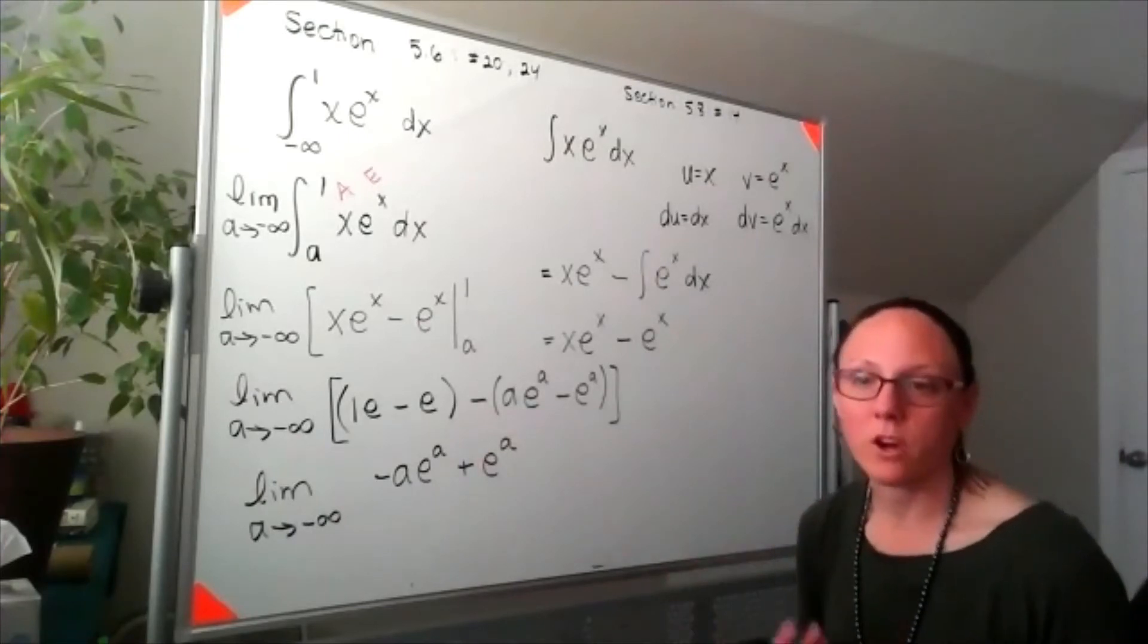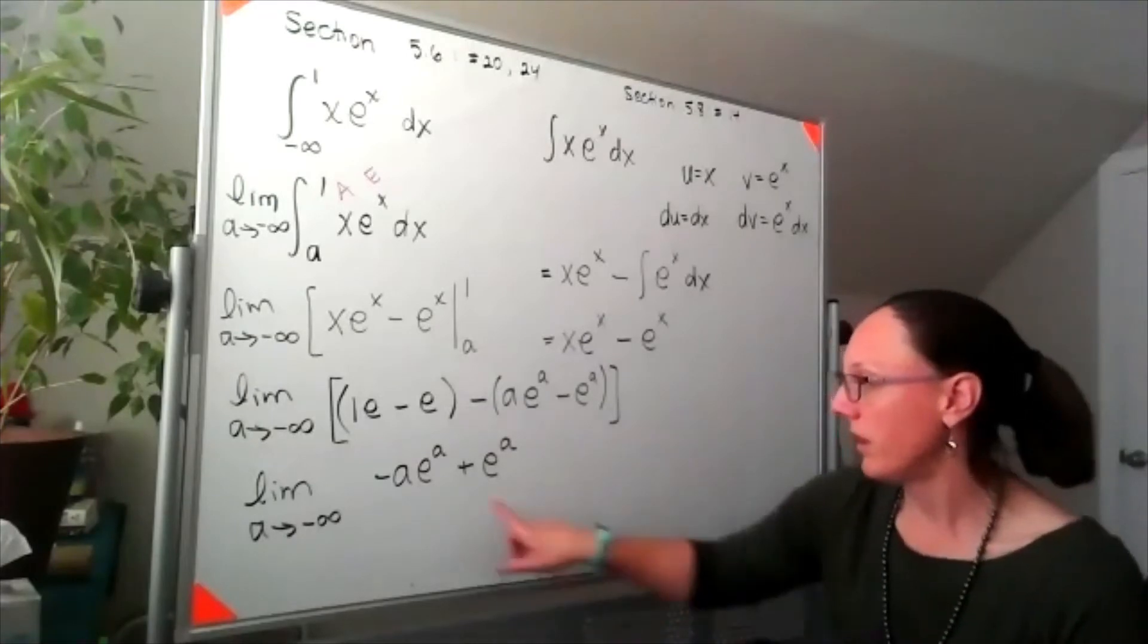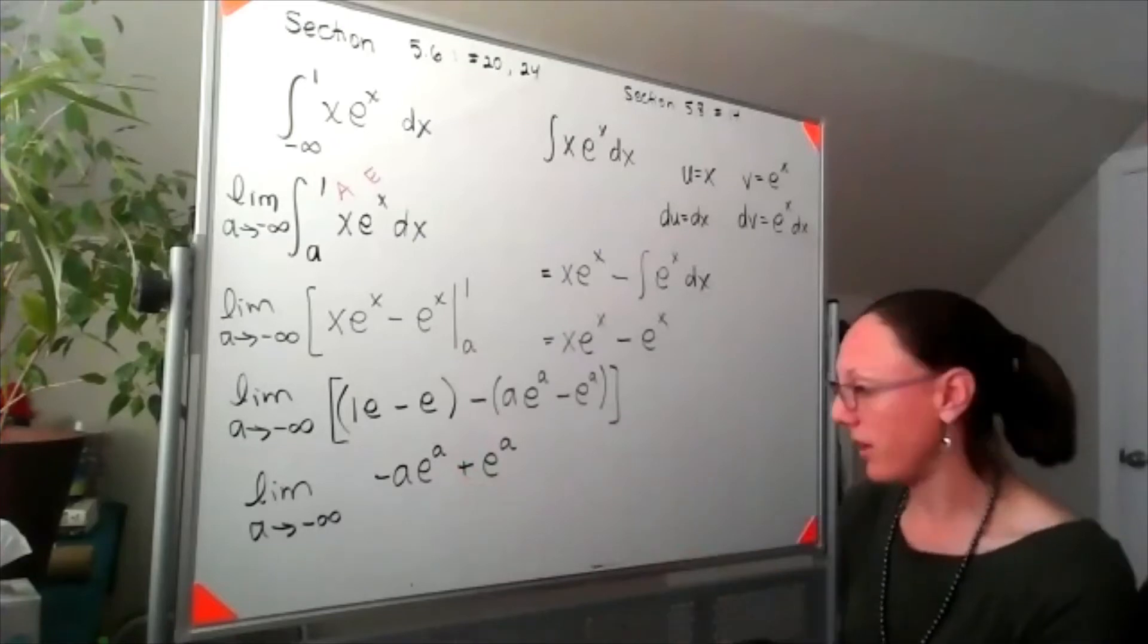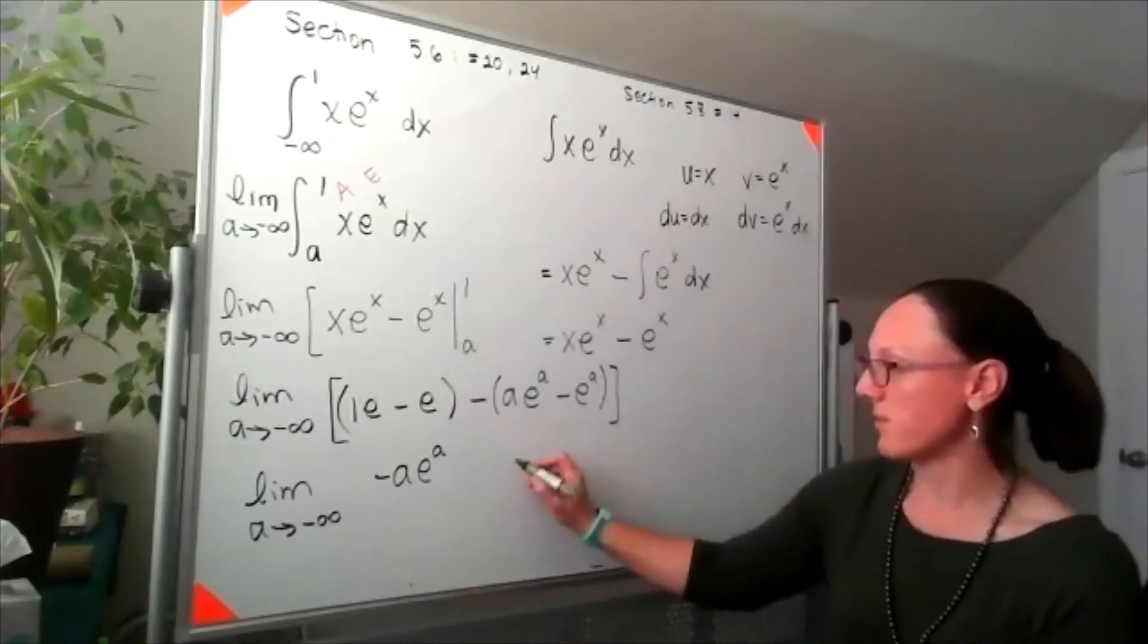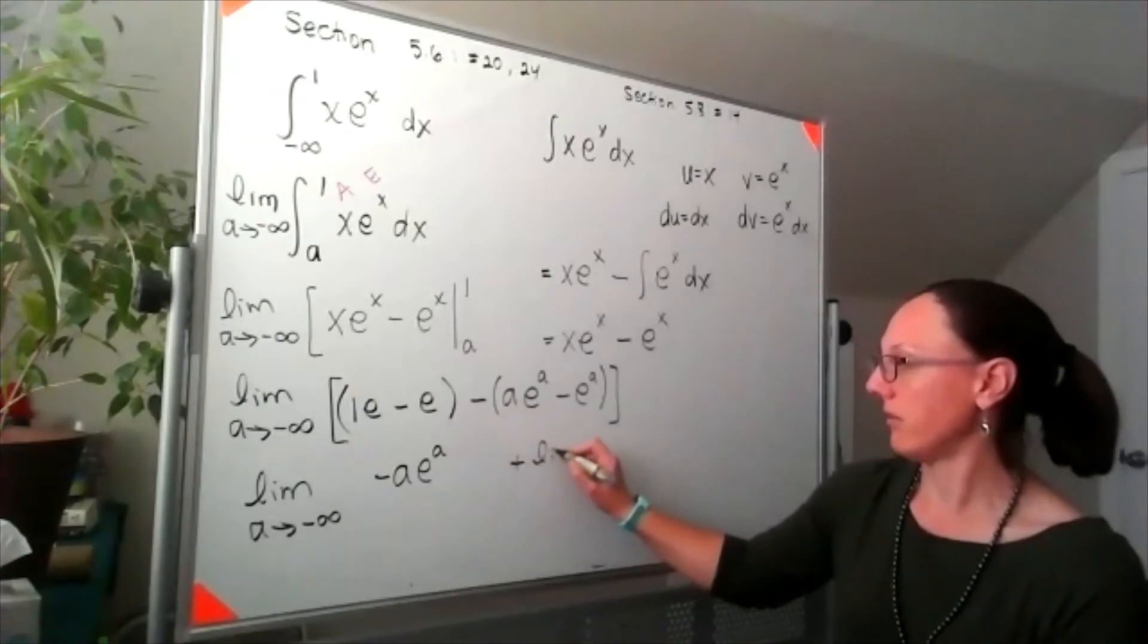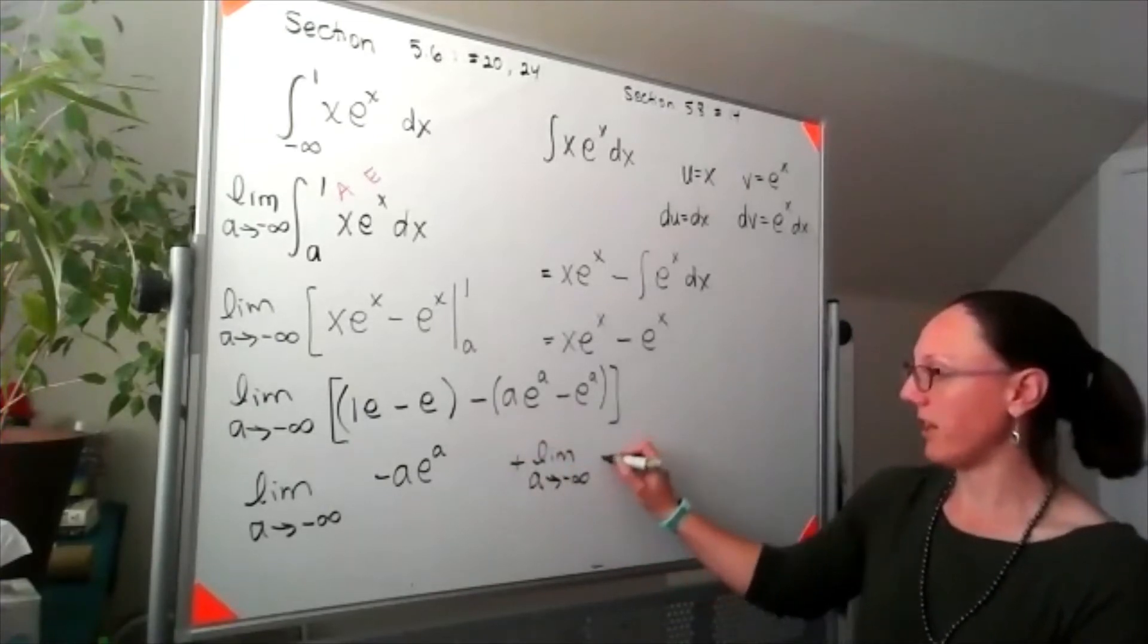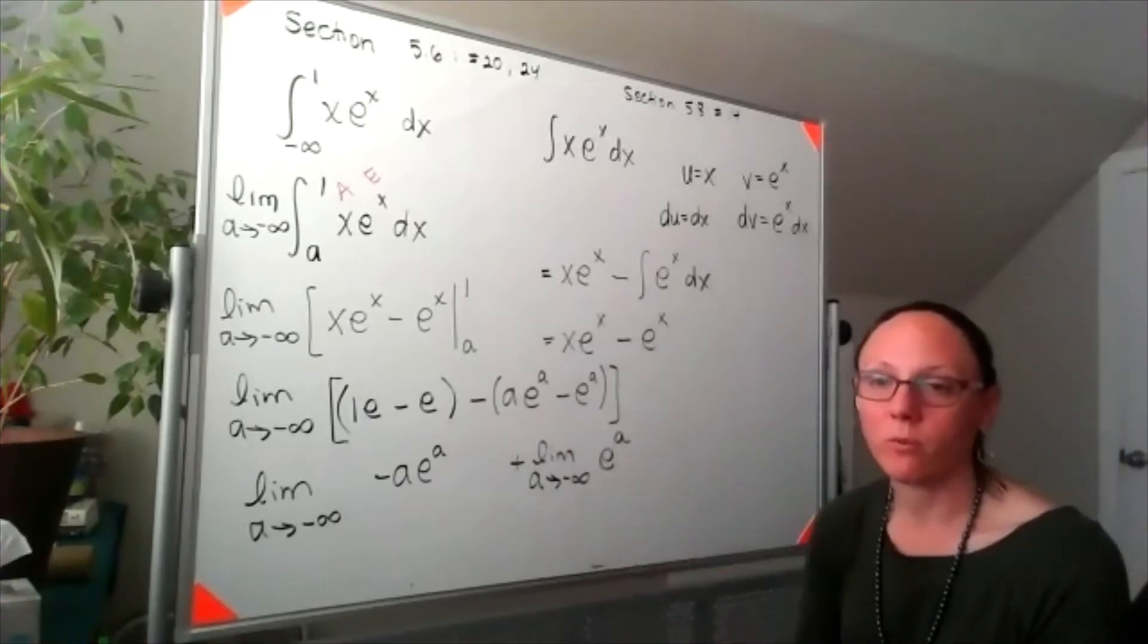Here's where we get to use our Calc 1 skills in terms of limits. If I have addition inside of a limit, I can break that apart as two separate limits, which I'm going to do because one of these is more complicated than the other. So here I've got the limit as a approaches negative infinity of e to the a. This limit we can evaluate right off.